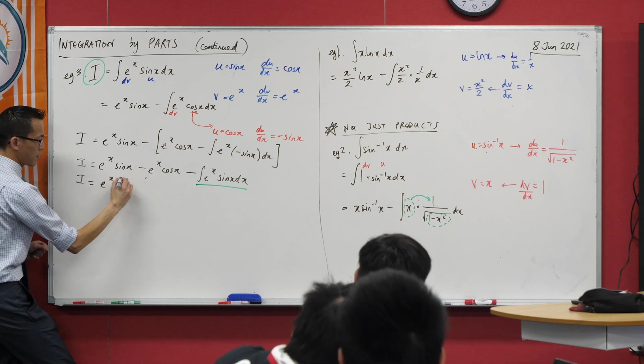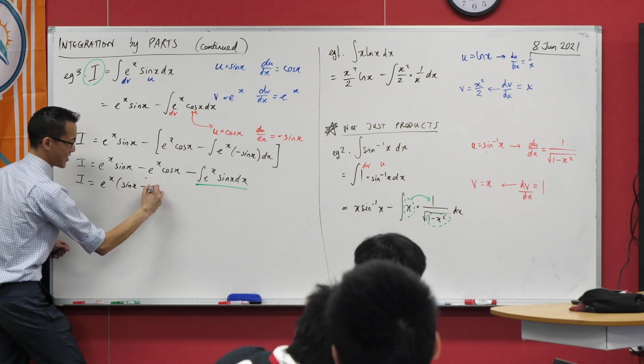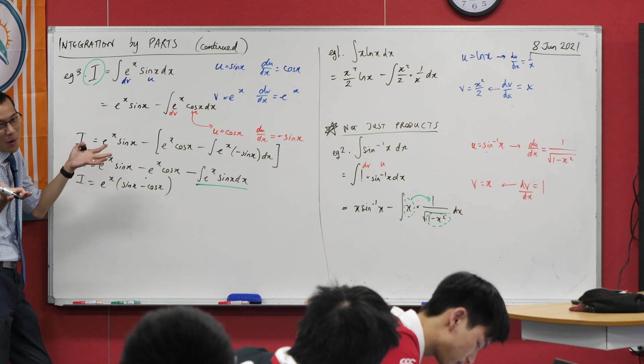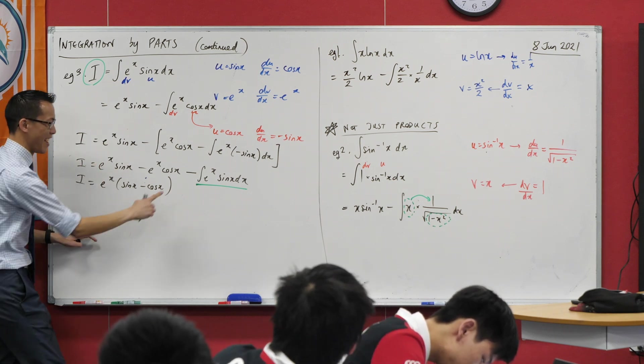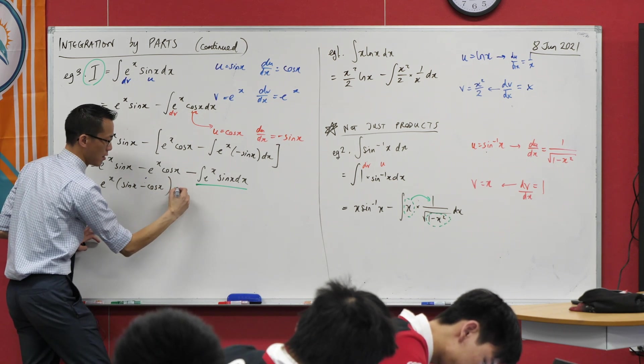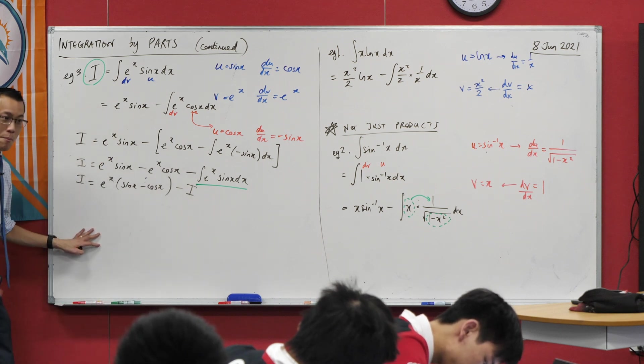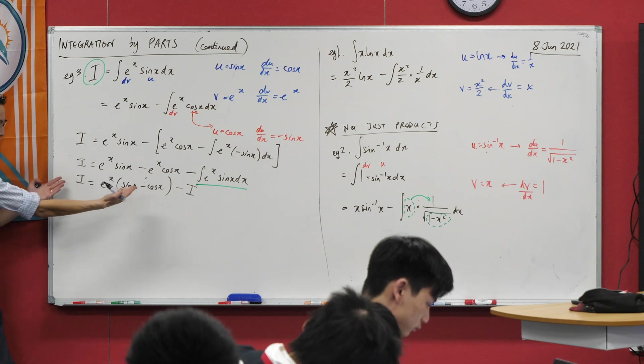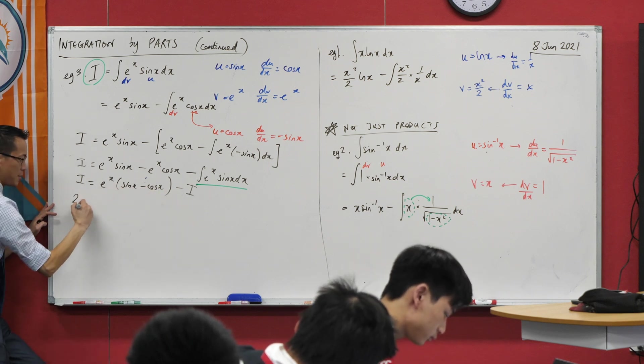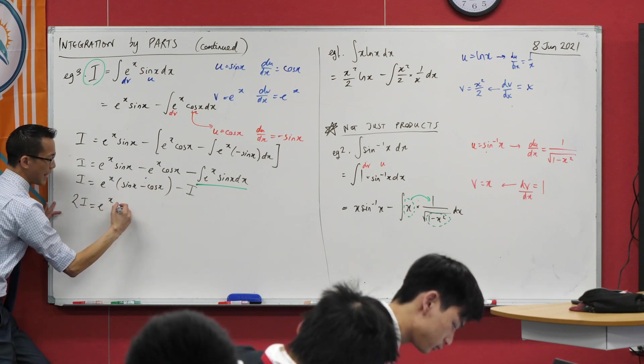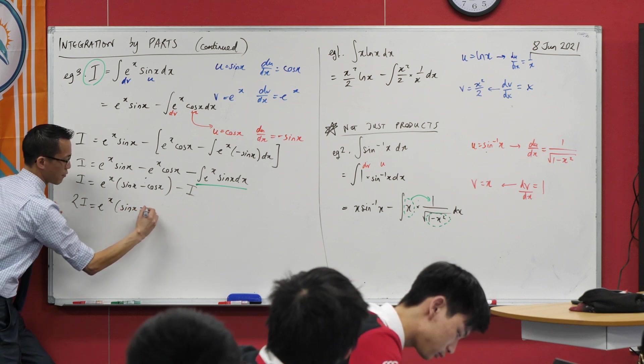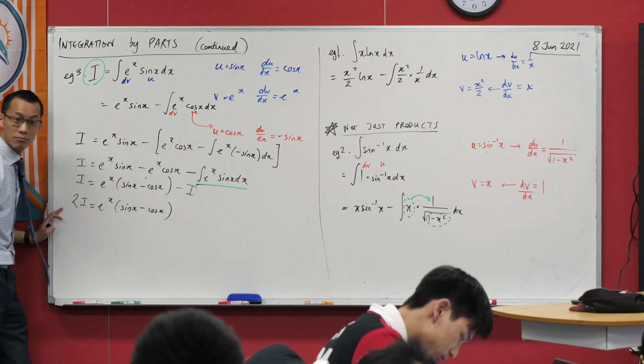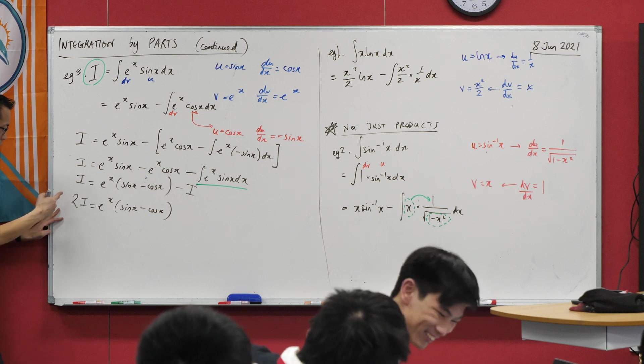So this gives me I's over here. I might as well be factorising while I'm at it, just because I like to make things nice and tidy. And I'm also lazy about writing another e to the x. And then I've got a minus I here, right? So now, remembering that the whole goal here was wanting to find out what I is, I'm just going to add an I to both sides. That gives me two over here. And all I need to do now is divide through by two. Does that make sense? So I'm just going to do it here.